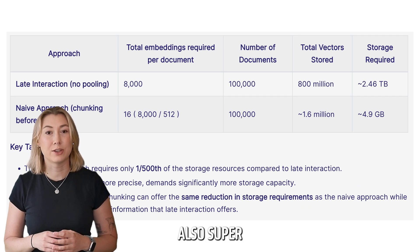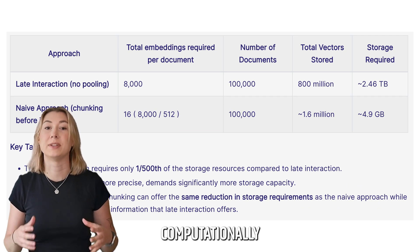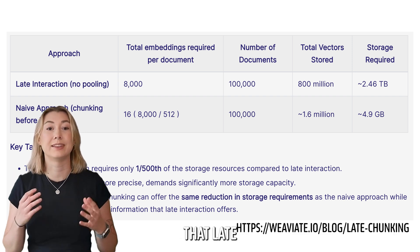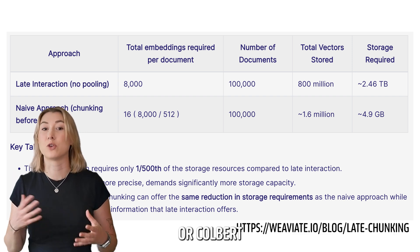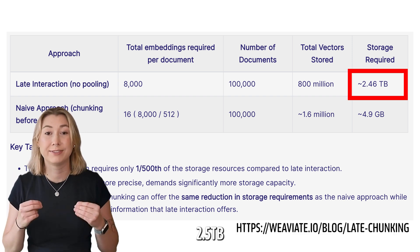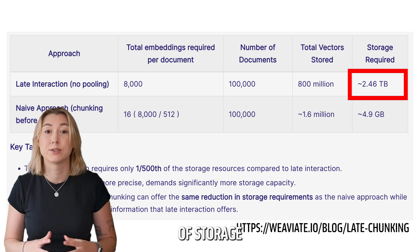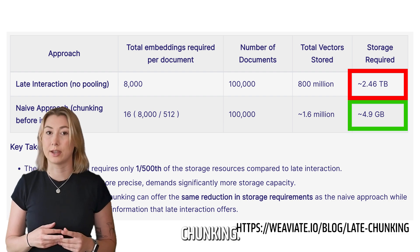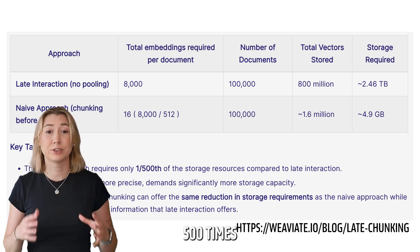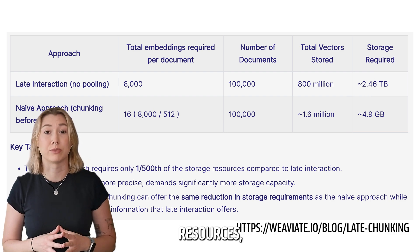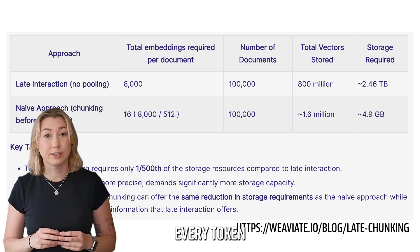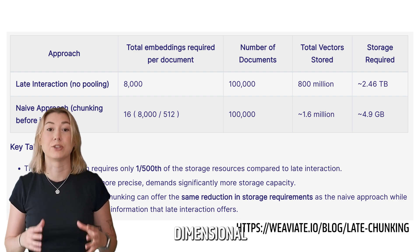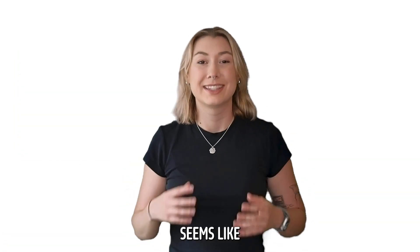Unfortunately, this is also super computationally expensive. In this blog post's benchmarks, we can see that late interaction, or Colbert, took about 2.5 terabytes of storage space, compared to the 5 gigabytes of regular chunking. That's 500 times more storage resources, because we need to store every token in a document as a high-dimensional representation. Madness!